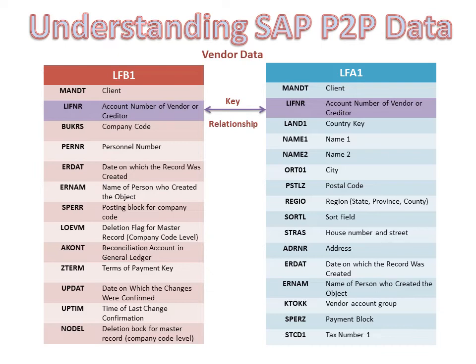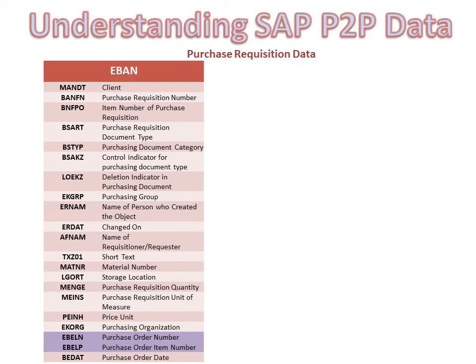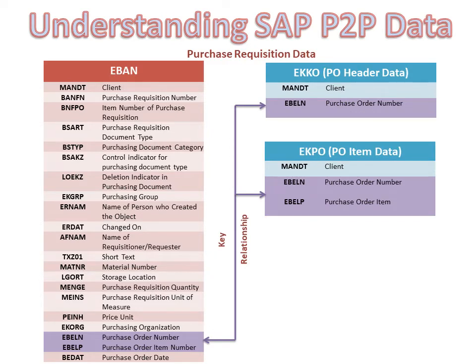LFB1 holds the vendor and the company while LFA1 holds all the other details for a vendor. Purchase requisition data resides in the EBEN table and holds all the details in it. The field BANFN is the purchase requisition number and BANFPO are the items added to it. When a purchase order is created, mostly it's against a requisition, hence in EBEN we have EBELN and EBELP — the PO number and item — updated against the requisition number, which are linked to the purchase order tables EKKO and EKPO.